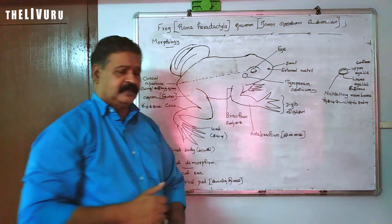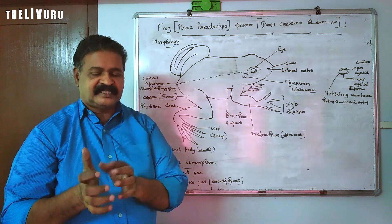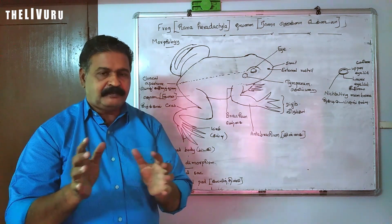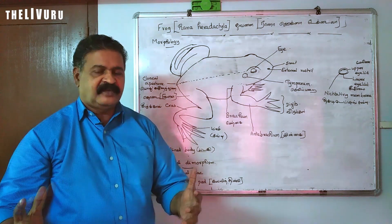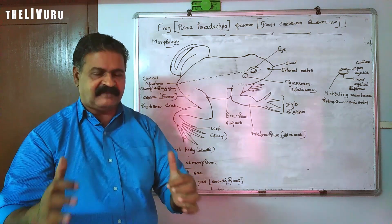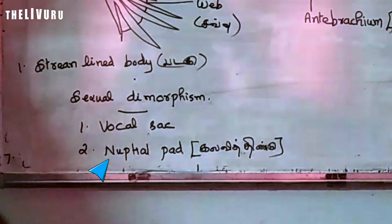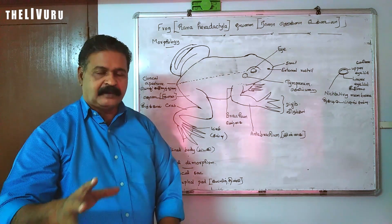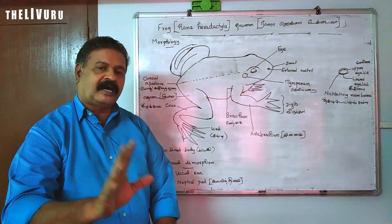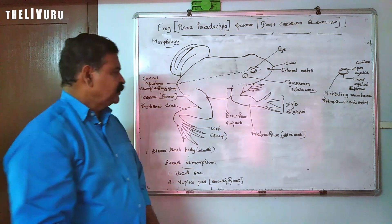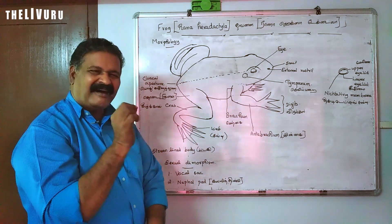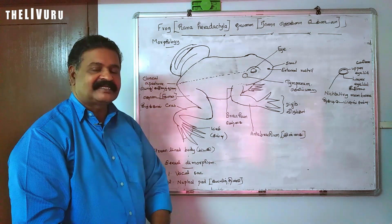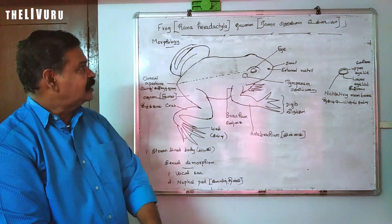During the breeding season, the male frog has a nuptial pad on the first digit of the forelimb. Both the nuptial pad and vocal sacs are found only in the male frog, not in the female. This concludes the morphology of Rana hexadactyla.